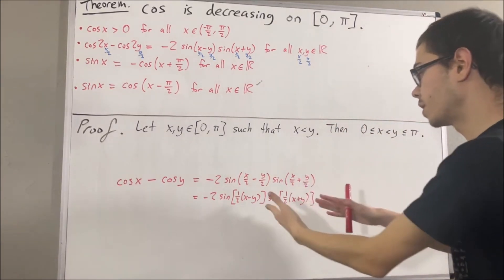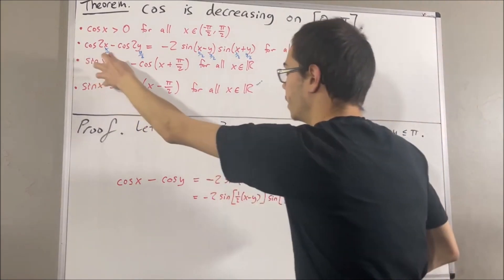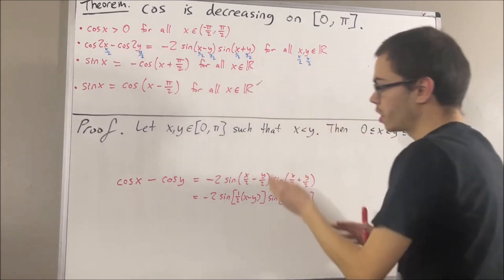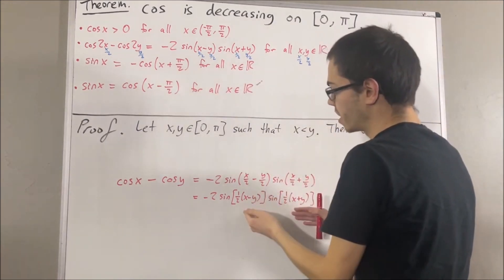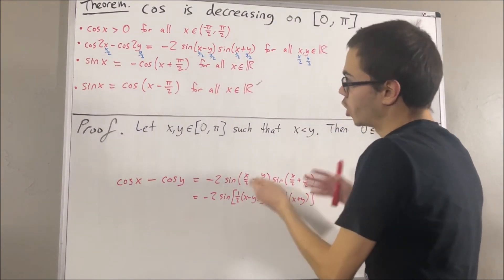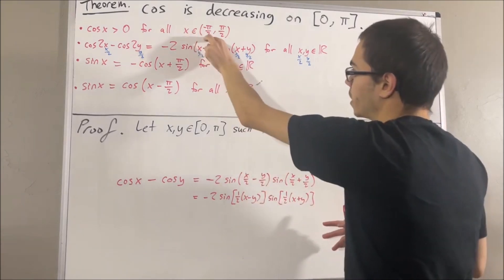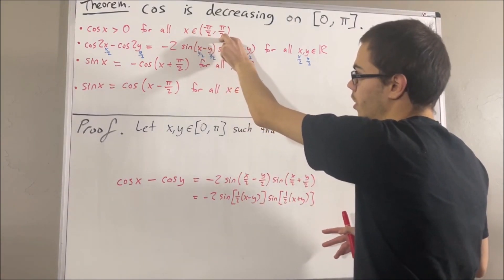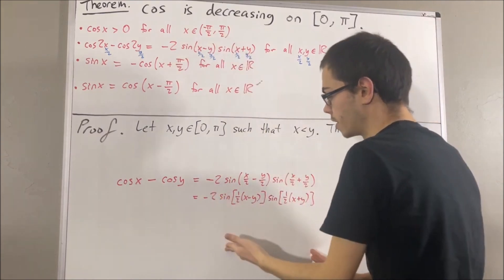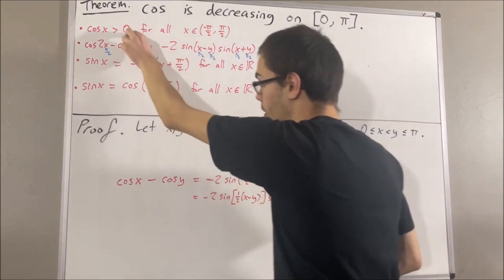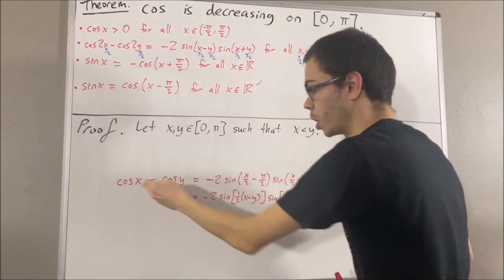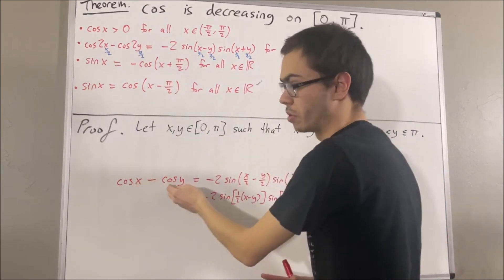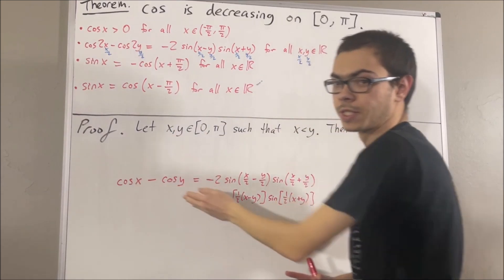The idea is to re-express the sine quantities in terms of cosine quantities by applying the two remaining preliminary results. The cosine quantities we express them in will have arguments between negative pi over 2 and pi over 2, so overall this expression is going to end up being positive. With cosine x minus cosine y positive, we have cosine x is greater than cosine y, which is exactly what we want.